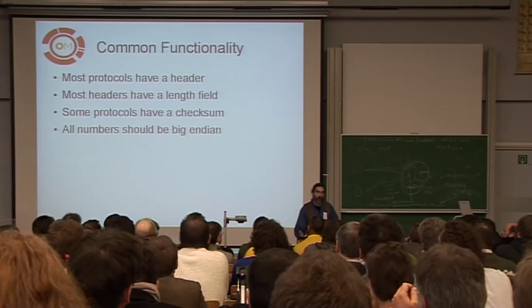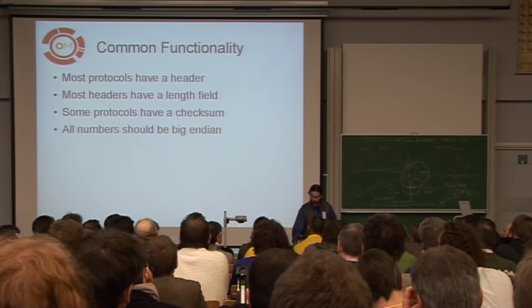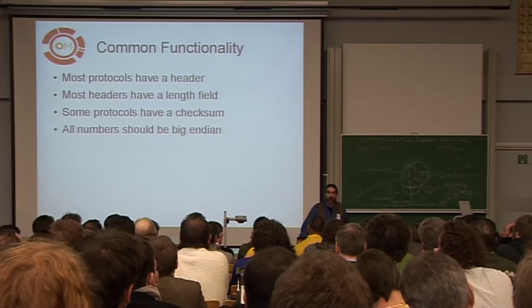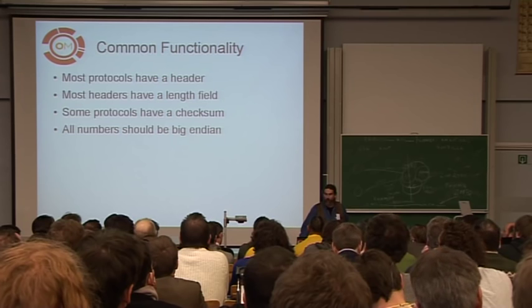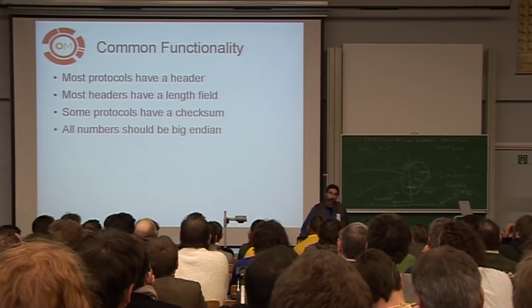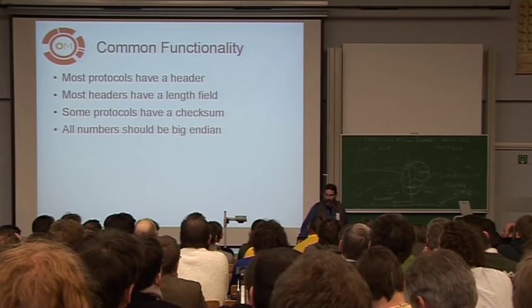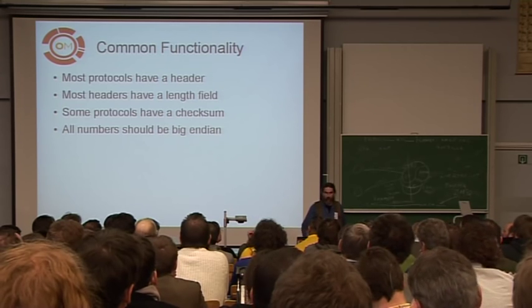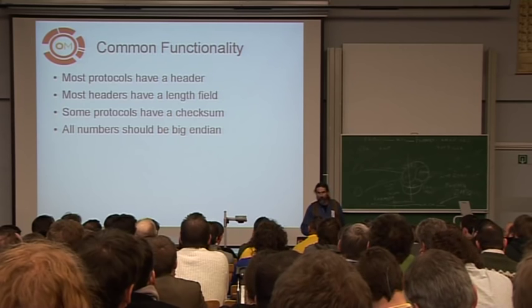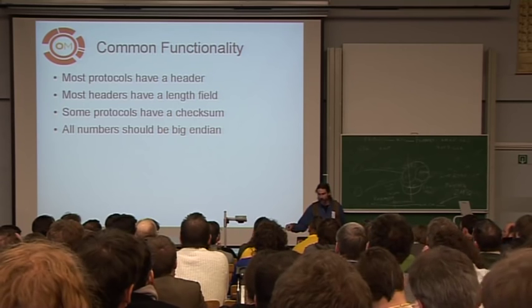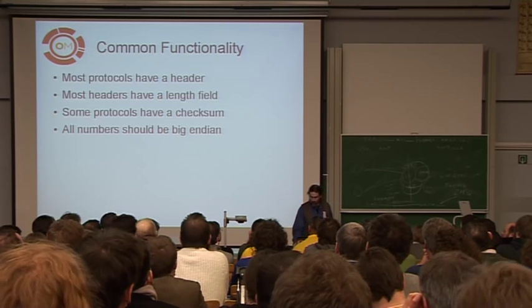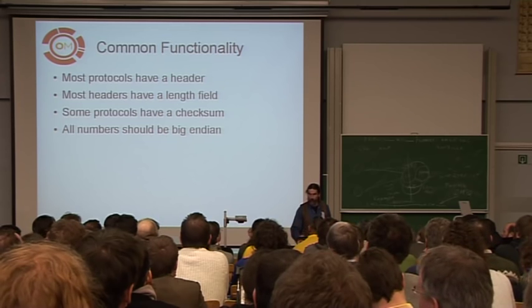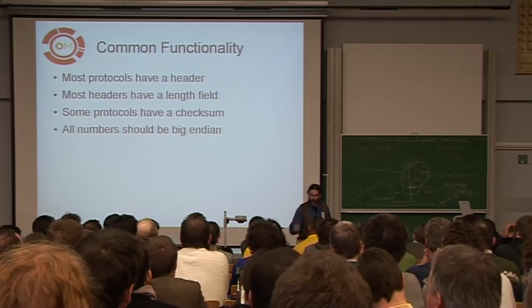Most protocols have a checksum. RTMP is not one of them — they don't care, which is probably why it's junk. Also, a lot of network protocols have all the numbers in big-endian format — network byte order. Although Adobe breaks this: it turns out with RTMP, some of the fields are little-endian instead of big-endian. Most of the time when you're looking at numbers you don't recognize them because you're looking at a double in big-endian. So what I actually do is print out a big chart of all the numbers 1 to 100 in big-endian format so I can go, 'Oh yeah, that's what that is.'